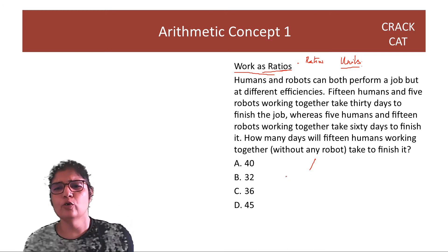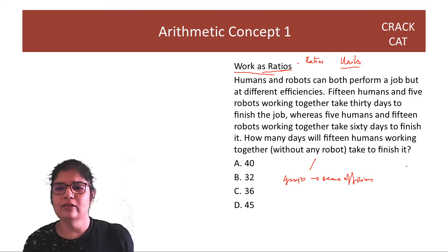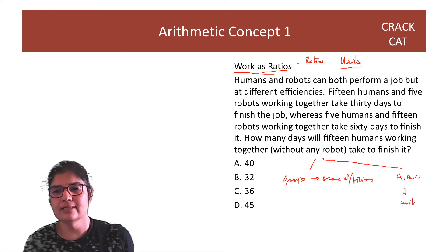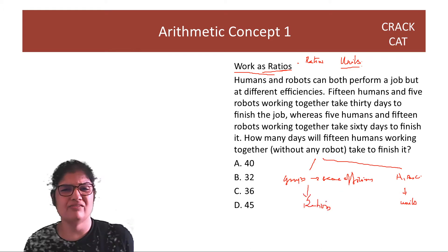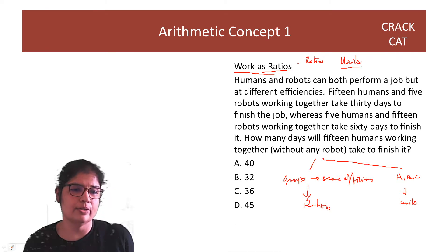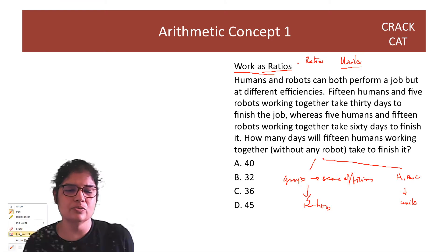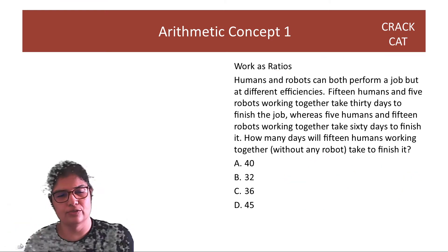So there are two kinds of questions that you see in work. Ek mein, there are groups of people. And within a group, people have the same efficiency. And doosra question hota hai, where everyone is working individually or sabke alag-alag efficiency. So ye waale question hum karenge units ke saath. Aur ye waala question hum karenge ratios ke saath. As much as possible, in fact, all the time I avoid fractions. I don't like fractions. I don't like equations. So how can we do such questions without fractions also and equations also?